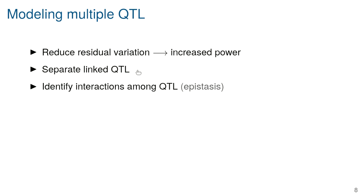Why go after multiple QTL? One reason: if you have a large-effect locus and take it into account, you reduce the residual variation when looking for further QTL, increasing power to identify loci of more modest effect. The second reason is to separate potentially linked QTL like that double-humped peak on chromosome one — you fit a model including both loci and compare it to the best single-locus model. The third reason is to identify interactions among QTL, which geneticists call epistasis — essentially the same as interactions among covariates in statistics generally.